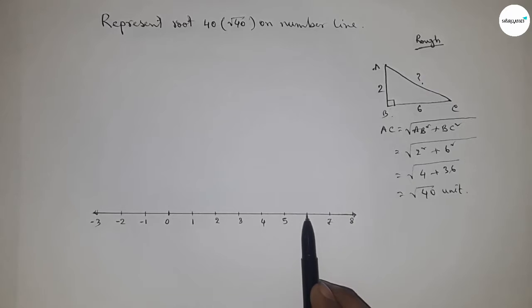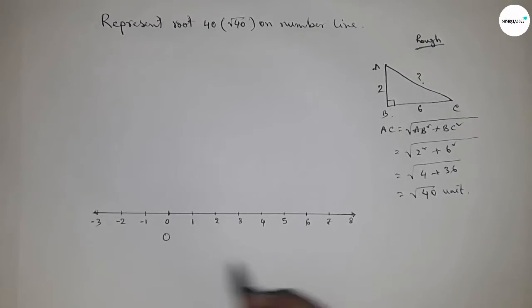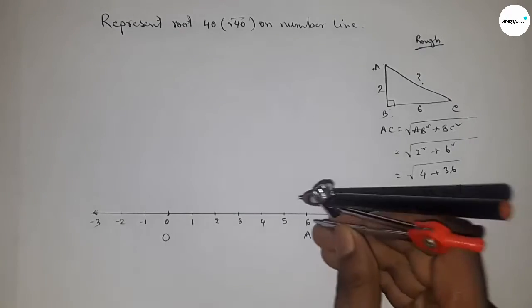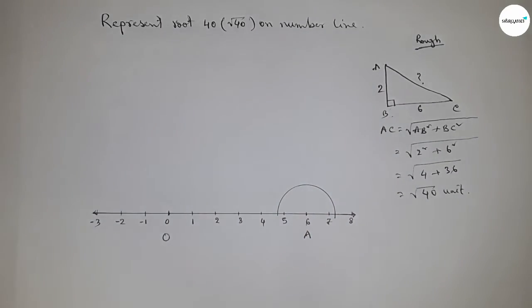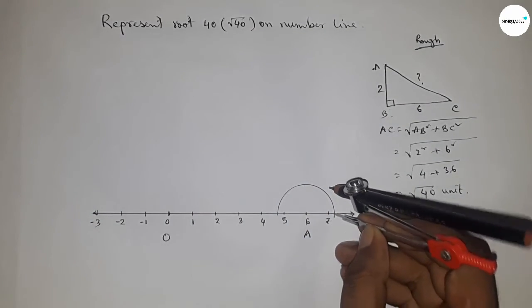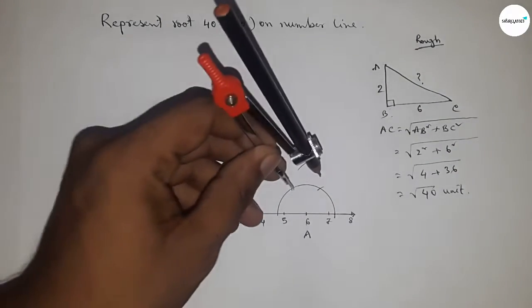This is taking O point and this is A point. So first drawing 90 degree angle on the point A. Taking any length and drawing an arc by this way with same length, and putting the compass here and cut here with same length, and cut here and drawing arc here.